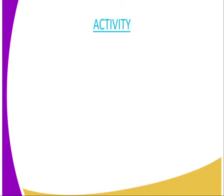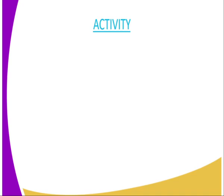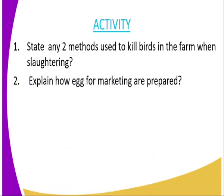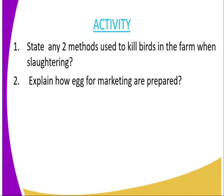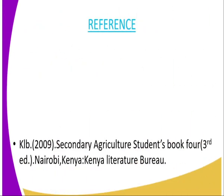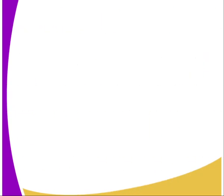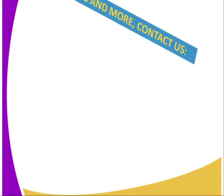We have come to the end of today's lesson and we are going to give you an assignment. The first question: state any two methods used in killing birds in the farm when slaughtering. And number two: explain how eggs for marketing are prepared. For reference, you can refer to Secondary Agriculture student book, published by the Kenya Literature Bureau.